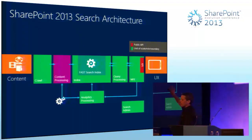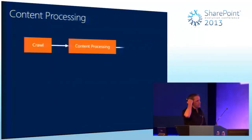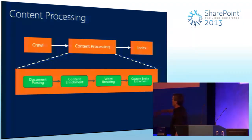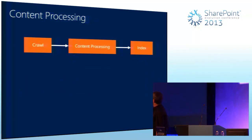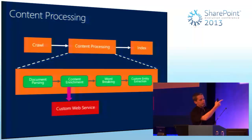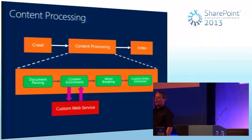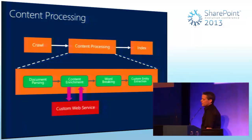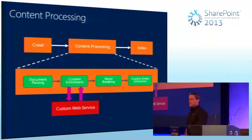The content processing component is very cool. Content processing falls between crawl and index, and the content processing pipeline has four steps: it parses the document, looks for any registered content enrichment providers, then does word breaking, then custom entity extraction. It's during the content enrichment phase that I can call out to a custom web service — I can say I found that word, term, group of terms, or dictionary — and the web service can return additional metadata and process that document at processing time, immediately before it's indexed.